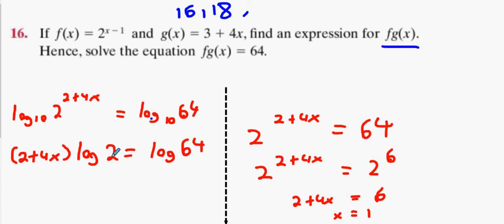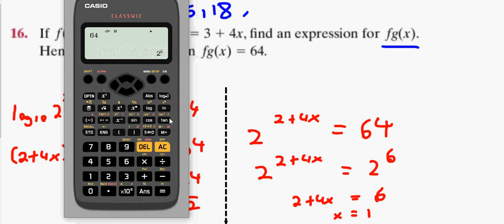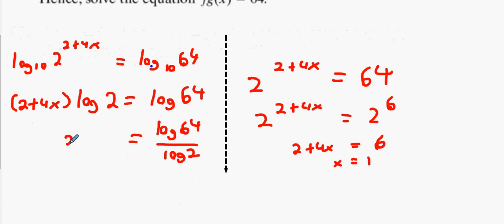Right, and what happens to the log 2? Where should I bring it? Underneath the 64. And what's log 64 divided by log 2? Six. And we end up with what we ended up with on the other side—we're going to end up with 2 + 4x equals 6. Fair play to you using the logs, decent show. And 4x equals 4, x equals 1.